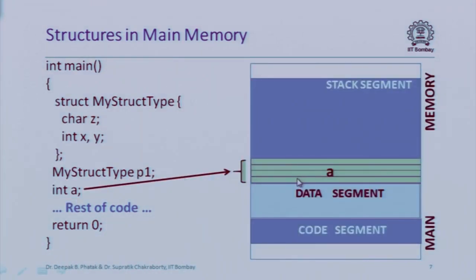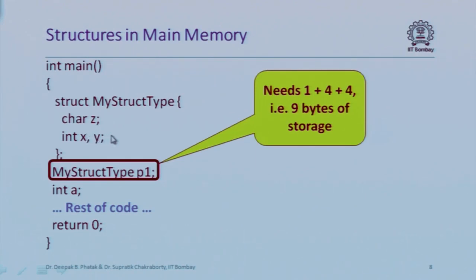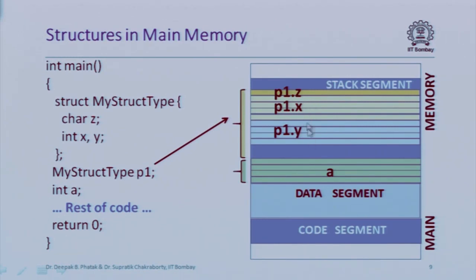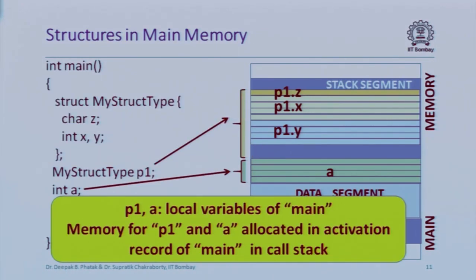In the stack segment, I have four bytes for a. How many bytes would I need for p1? p1 is an object of my struct type, so it needs two integers and a character. Each integer requires four bytes, so that's eight bytes, plus one byte for the character — nine bytes of storage. In memory, the storage for p1 would have one byte for member z, four bytes for member x, and four bytes for member y. However, I've allowed some gap in the brace shown here, which we'll discuss shortly. Local variables are allocated space in the stack.